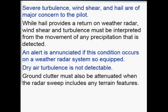Severe turbulence, wind shear, and hail are of major concern to the pilot, as they can cause great damage to the aircraft. Pilots try to avoid turbulence, wind shear, and hail. While hail provides a return on weather radar, wind shear and turbulence must be interpreted from the movement of any detected precipitation — how quickly the precipitation is moving from one place to another creates a picture of how much turbulence is ahead.